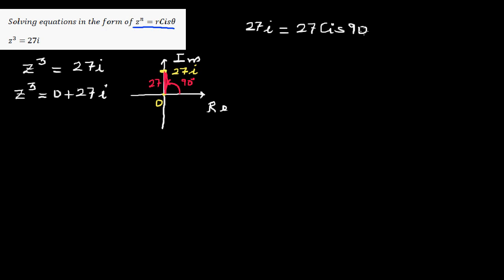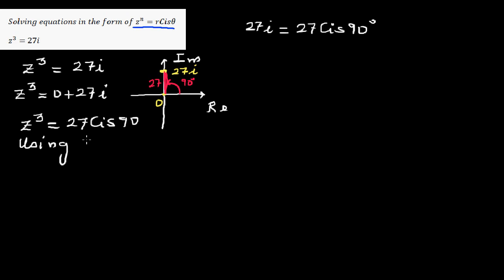That means this point is at a distance of 27 and making an angle of 90 with the positive arm of the x-axis. So we can write Z cubed as 27 cis 90. According to the fundamental theorem of algebra, if this is a cubic equation, it has three roots. We'll use De Moivre's theorem.